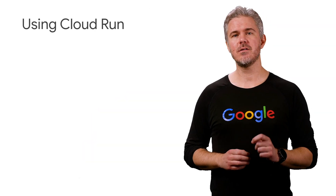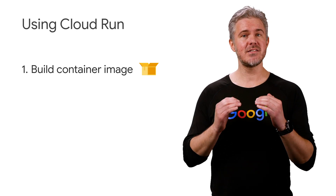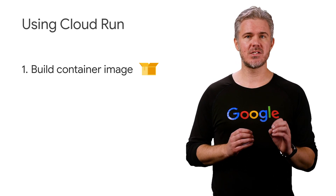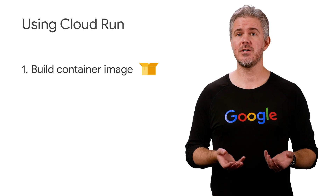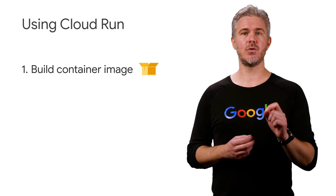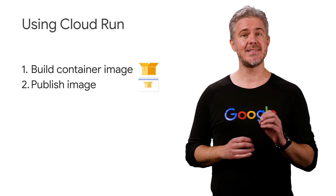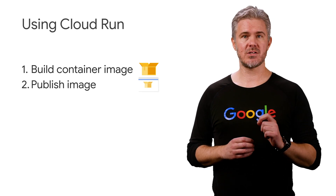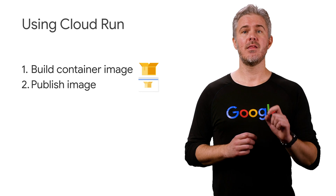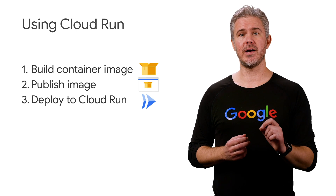When your Dockerfile is ready, there are three steps to get it running on Cloud Run. First, you'll build your container image, which executes the commands in your Dockerfile and creates a resulting image. You can build it on your workstation using a tool like Docker, or you can do the build step in the cloud using Google Cloud Build. Second, you'll publish your container image to a container registry. Once your container image is in the registry, the third step is easy: deploy to Cloud Run using the command gcloud run deploy and pass in your published image path.